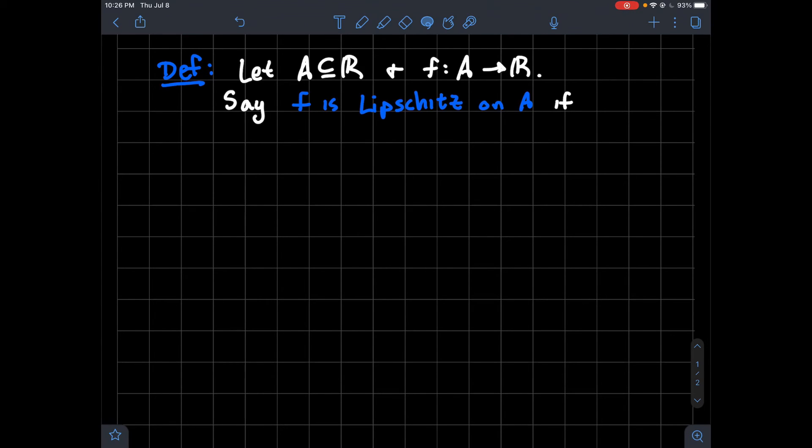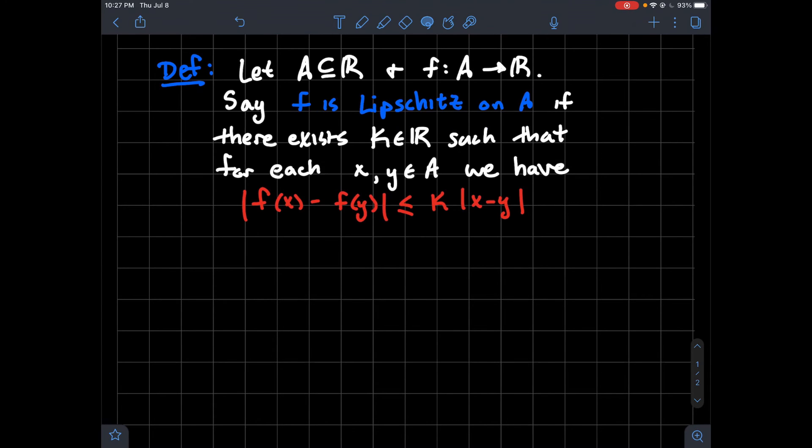So our definition: let A be a subset of the real line and f a function from A to the real line. We say f is Lipschitz on A if the following happens. There exists some constant k, which should be a positive real number, such that for any two points x and y in A we have the distance from f of x to f of y is less than or equal to k times the distance from x to y.